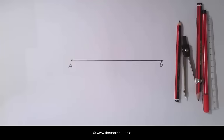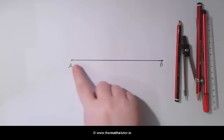We are going to construct a perpendicular bisector of a line segment using only a compass and a straight edge. In this example, we are going to construct the perpendicular bisector of the line AB.